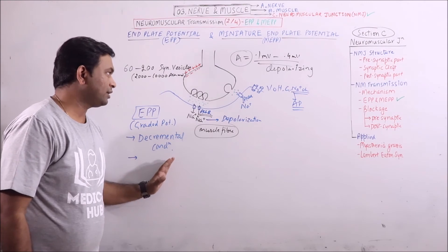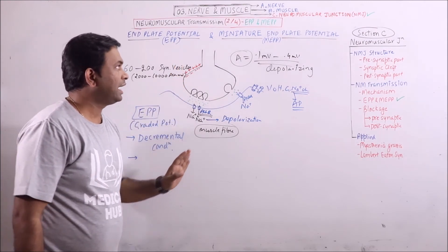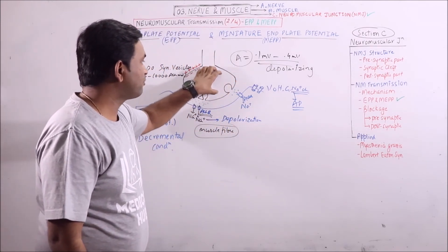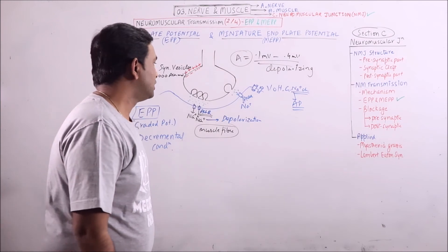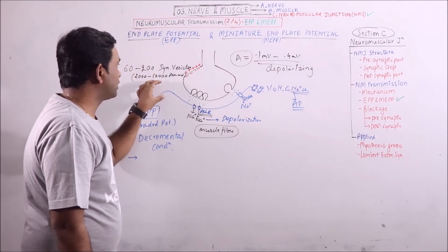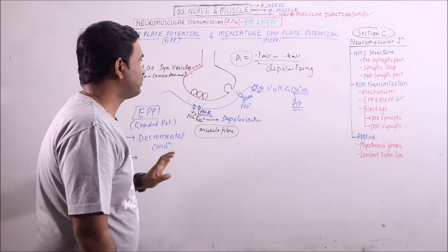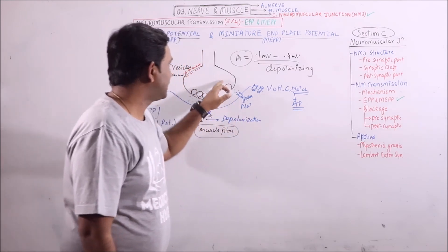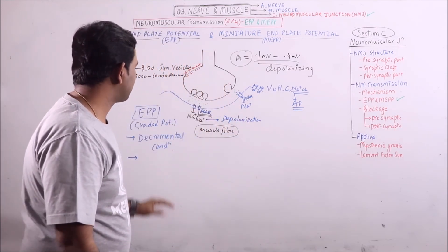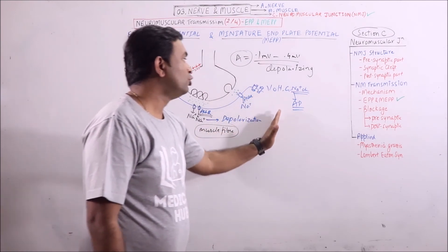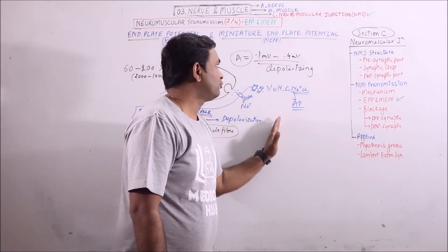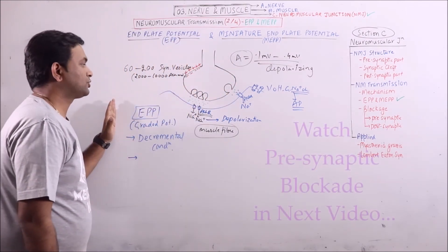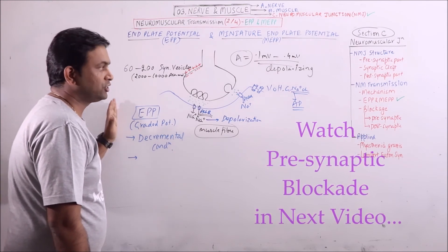End plate potential is produced when the action potential arrives and miniature end plate potential is produced when the motor fiber is at rest or neuromuscular junction is not working. In EPP, 60 to 200 synaptic vesicles fuse with the axonal membrane. In MEPP, only one synaptic vesicle fuses with the axonal membrane. EPP is of high amplitude while MEPP is of low amplitude. MEPP amplitude is 0.1 millivolt to 0.4 millivolt which will not give rise to action potential. EPP has sufficient strength to initiate the action potential.